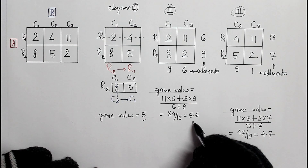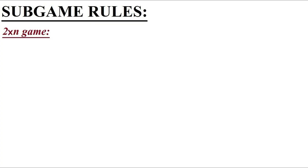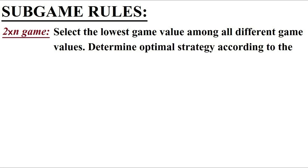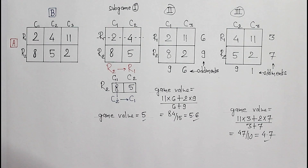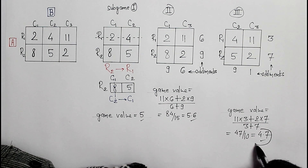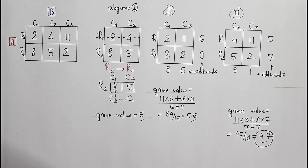We now have three game values for three sub games and only one of them is our prime game value. For a 2 by n game matrix, the rule is to select the lowest game value among all three. The main game value is 4.7, and we will determine the optimal strategy according to the respective sub game — the sub game with the lowest game value.